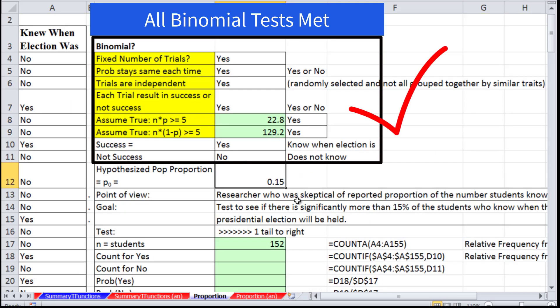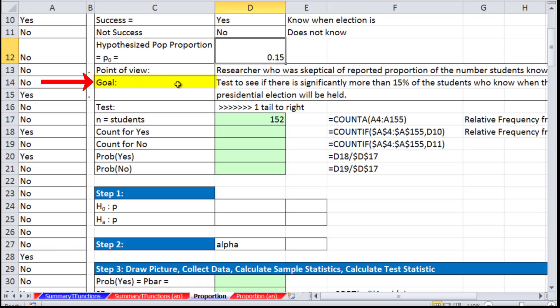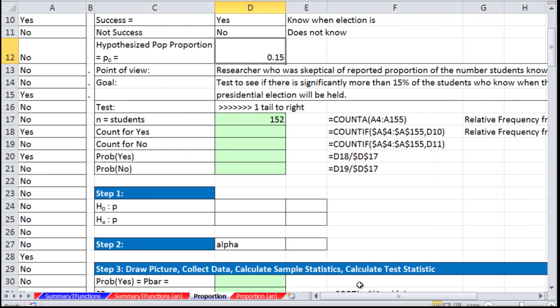Here's our hypothesized population proportion, 0.15. Before we set up our test, we need to look at the point of view and the goal. The point of view is a researcher who is skeptical of a reported proportion of the number of students who knew when the presidential election was.